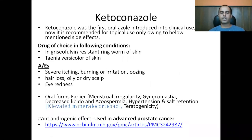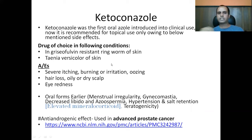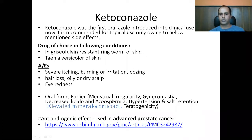Ketoconazole was the first oral azole drug introduced clinically but is now recommended for topical use only because of its major side effect of hepatotoxicity. It is the drug of choice for griseofulvin-resistant ringworm of the skin and tinea versicolor. Adverse effects include severe itching, burning, irritation, oozing, hair loss, oily or dry scalp, and eye redness from topical use. The oral form (still used for anti-androgenic effect in advanced prostate cancer) can cause menstrual irregularity, gynecomastia, decreased libido, azoospermia, hypotension, salt retention, and teratogenicity.